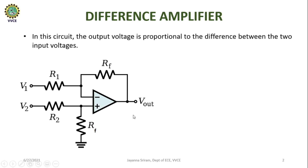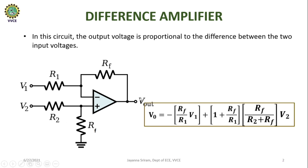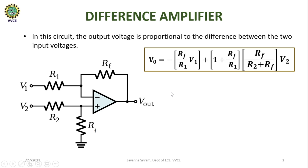The output voltage V0 is obtained by applying superposition theorem to this circuit. This is the output expression for the difference amplifier, where the first part of the output is obtained due to the input applied to the inverting terminal with the non-inverting terminal grounded, and the second part is obtained due to the input applied to the non-inverting terminal with the inverting terminal grounded.